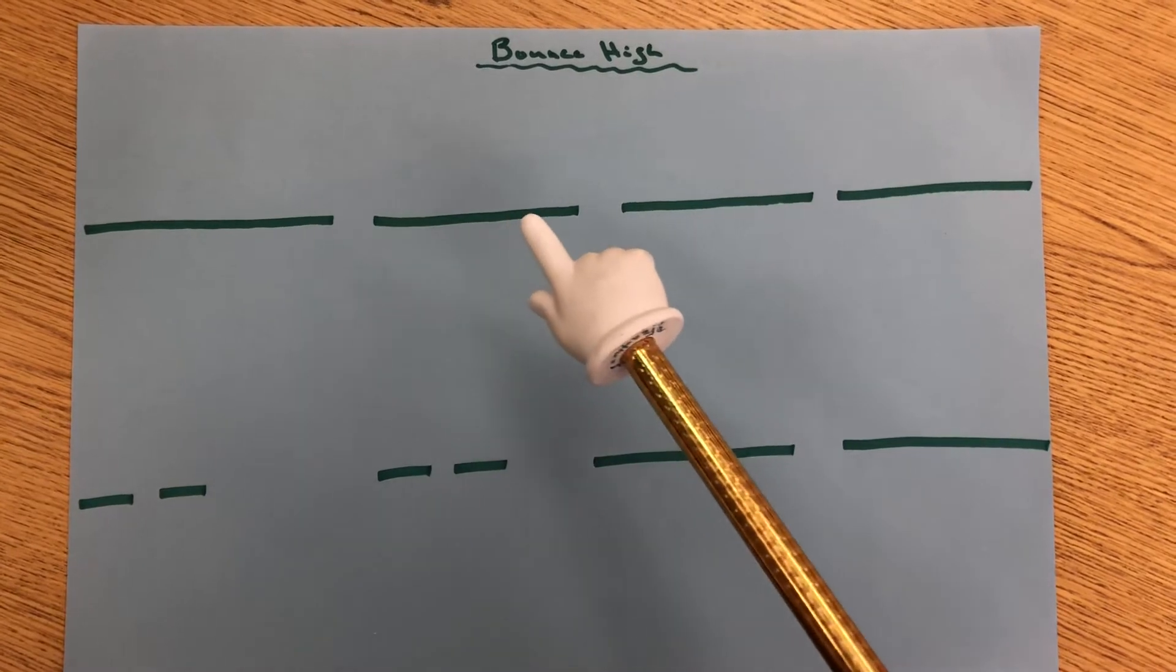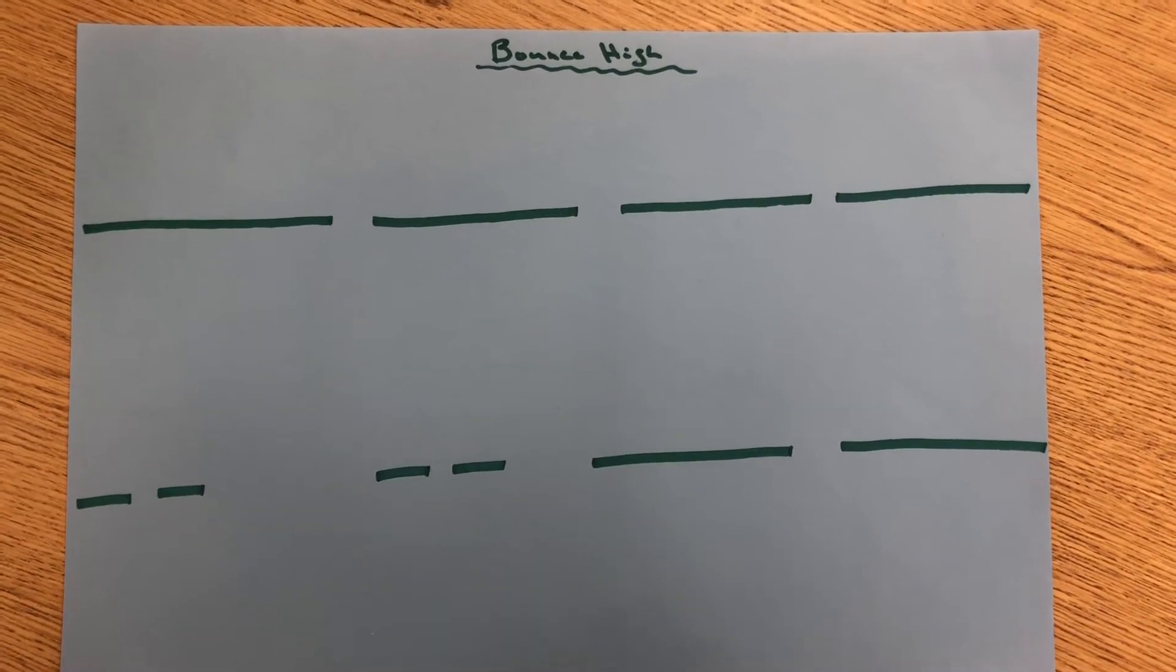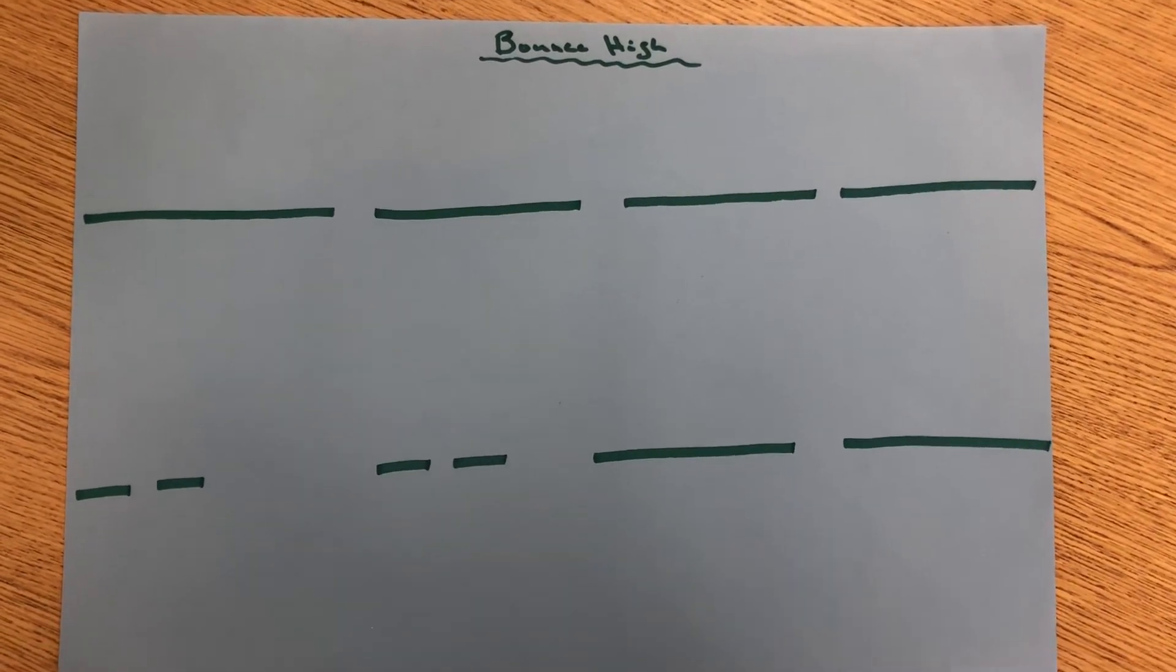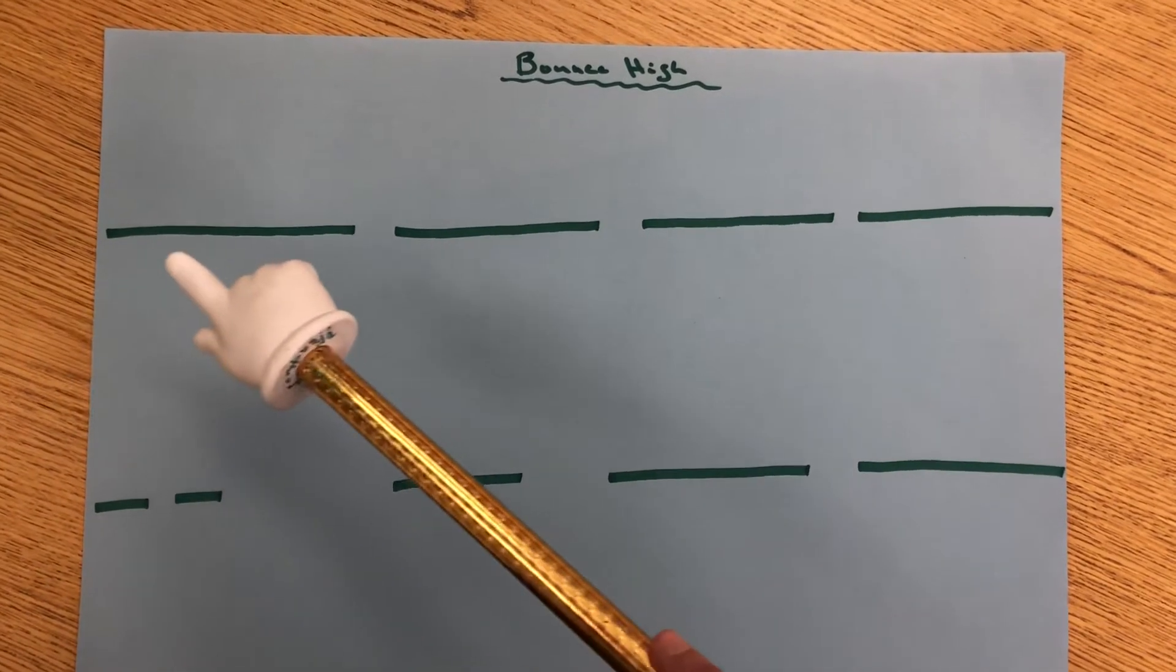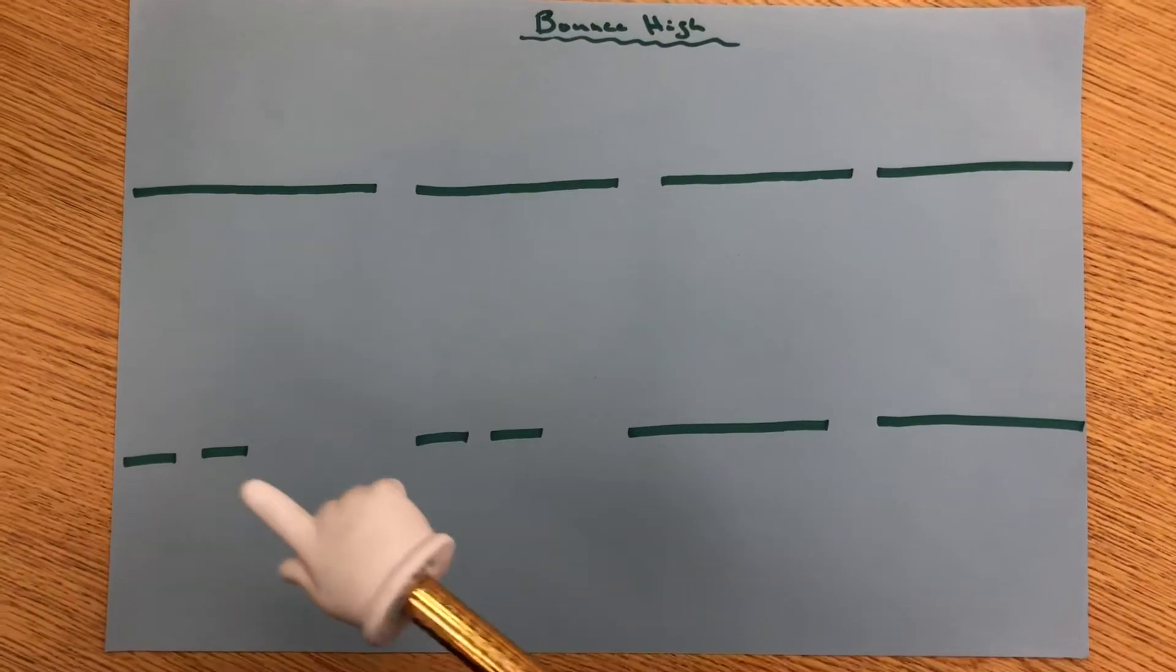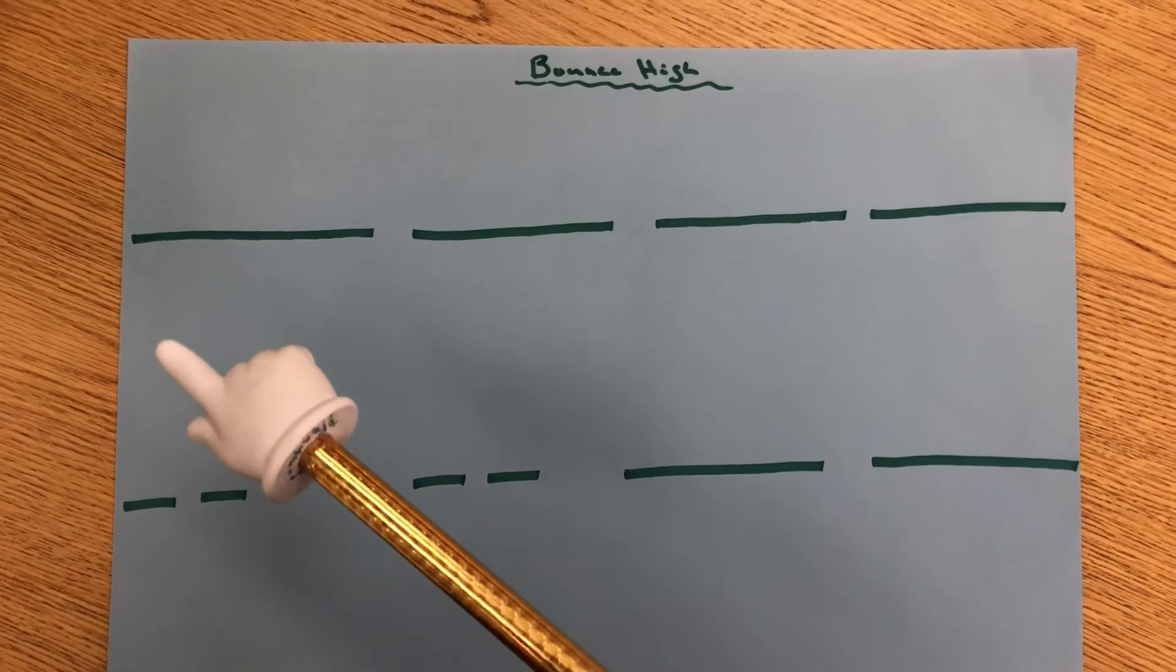Music has long sounds and music has short sounds. So the long lines represent long sounds and the short lines represent our short sounds.